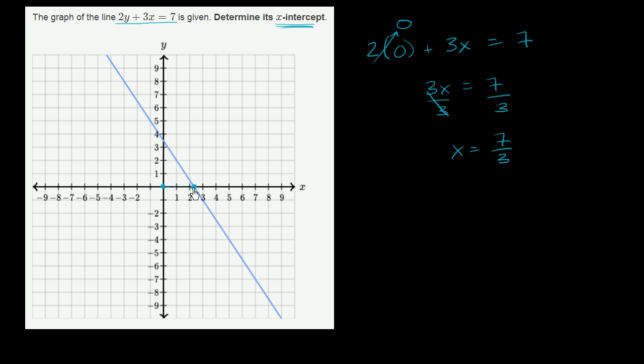Now, does that look like 7 thirds? Well, we just have to remind ourselves that 7 over 3 is the same thing as 6 over 3 plus 1 over 3. And 6 over 3 is 2. So this is the same thing as 2 and 1 third.